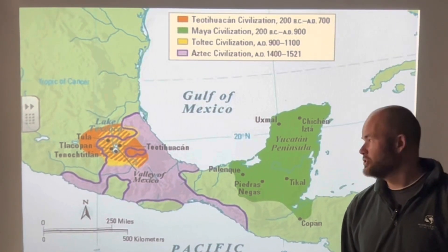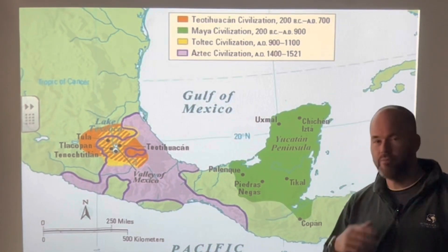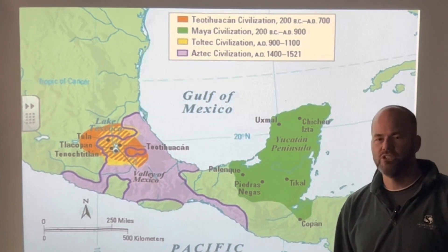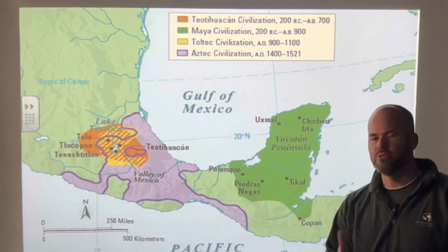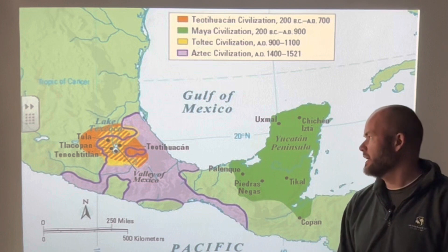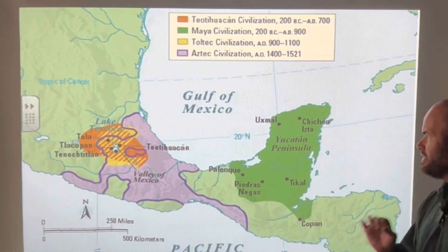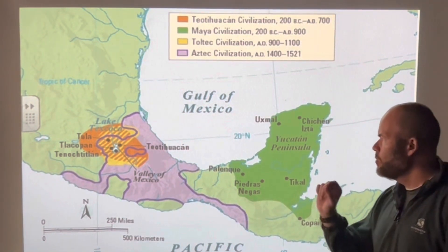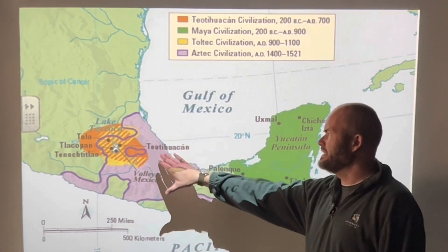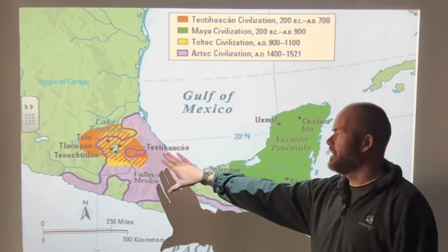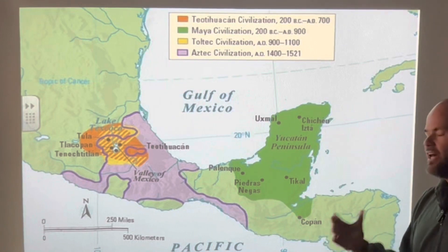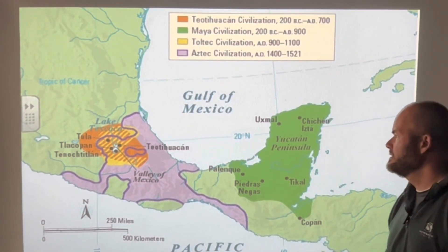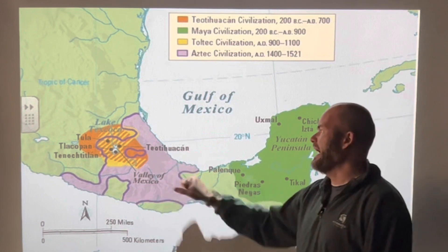Welcome back students and teachers. Today we're going to be examining some documents from the Stanford History Education Group. There'll be a link in the description if you'd like to access the materials directly. Within the documents, we're going to be considering how likely we think it is that the civilization of Teotihuacan influenced other Mesoamerican civilizations like the Maya and the Aztecs.